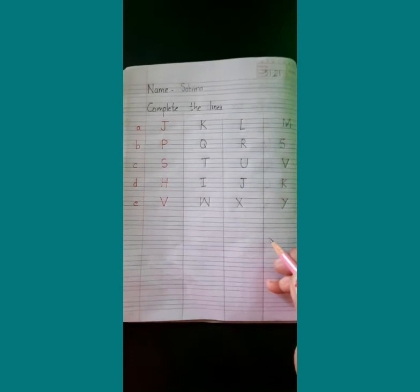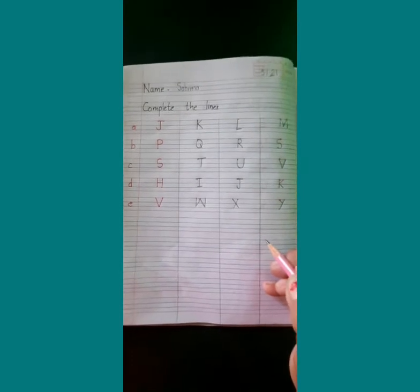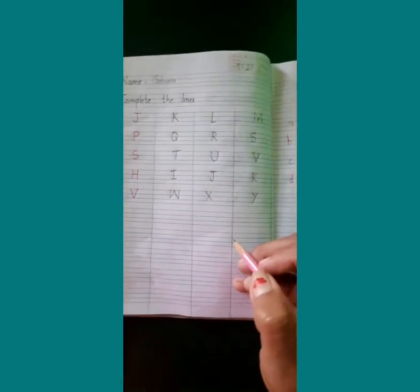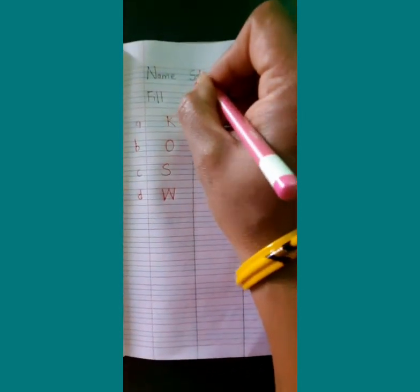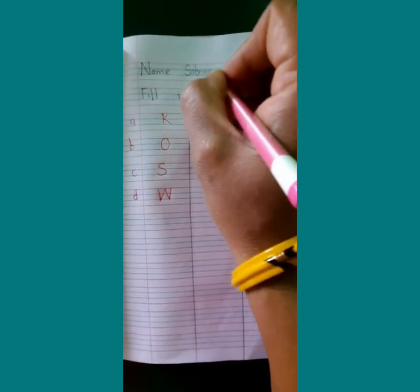So children I have finished writing complete the lines. Now we will come to the next page for fill in the blanks. So we will write our name on top here like this. Then we are going to put the date here: 5.1.21. Now children we will write fill in the blanks.